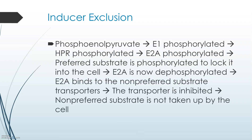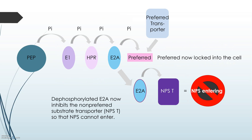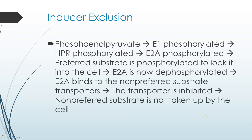For inducer exclusion, it starts the same way — the phosphate is passed along from PEP to the enzymes. When a preferred substrate is flooding into the cell via a transporter, E2A phosphorylates it to lock it in. This time, the dephosphorylated E2A binds to a non-preferred substrate transporter, preventing non-preferred substrates from entering the cell. That is what inducer exclusion does.